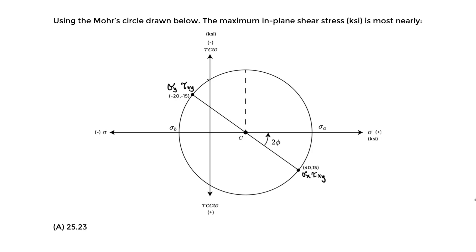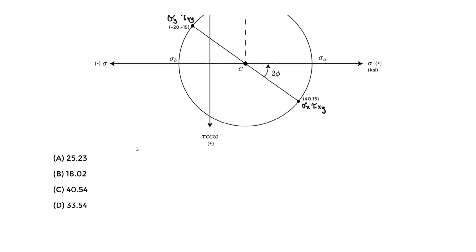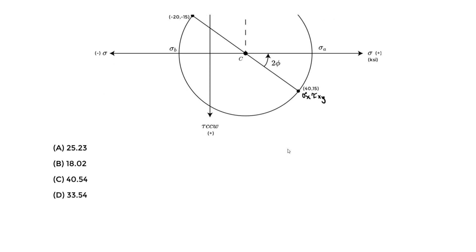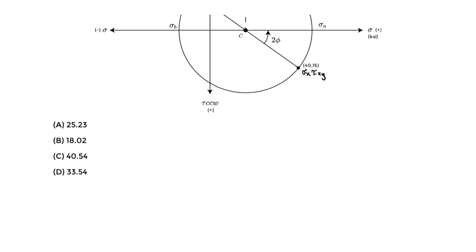Our end goal is to find the maximum in-plane shear stress in KSI. We know that the maximum in-plane shear stress, tau max, will simply equal the radius of the Mohr's circle. This is also noted in the handbook: the maximum in-plane shear stress tau max is the radius of the Mohr's circle.